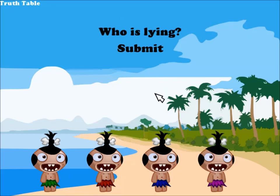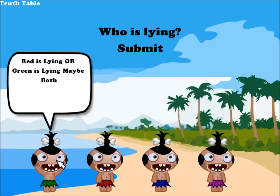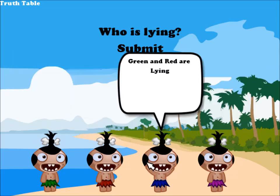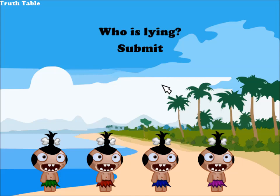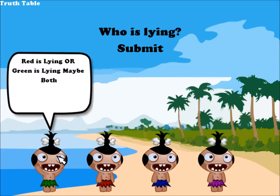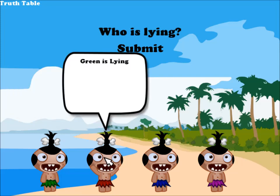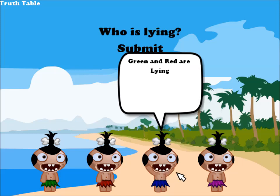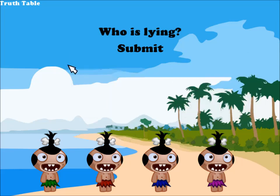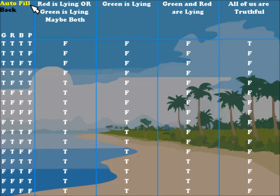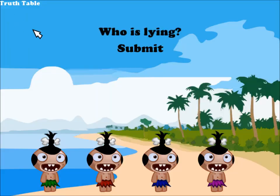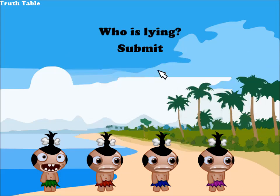This next problem is one I made up myself, and as you can see, we've got four islanders — that's the maximum the program allows, since we're running out of screen space. Green says red is lying or green is lying — maybe both. Red says green is lying. Blue says green and red are lying. Purple says all of us are truthful. We use the truth table and hit autofill, then look for the consistent row.